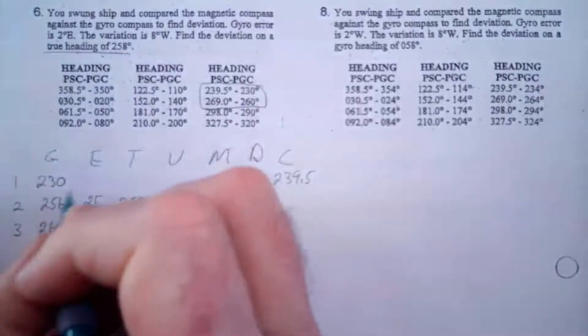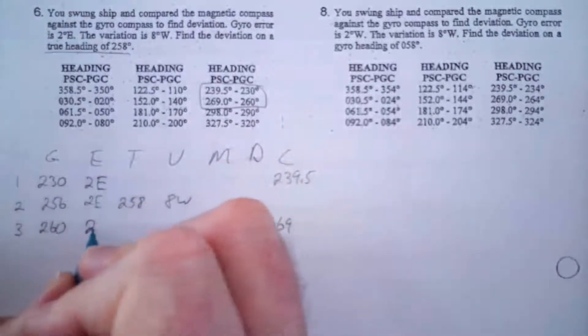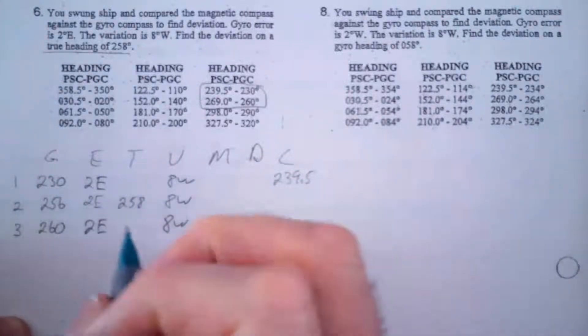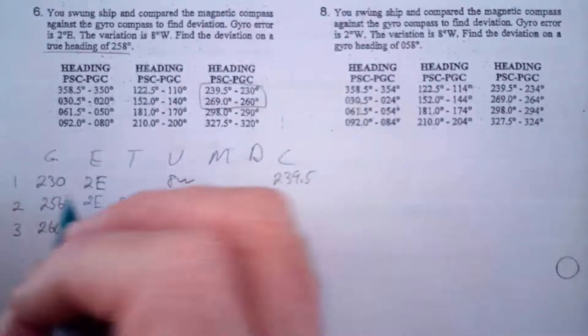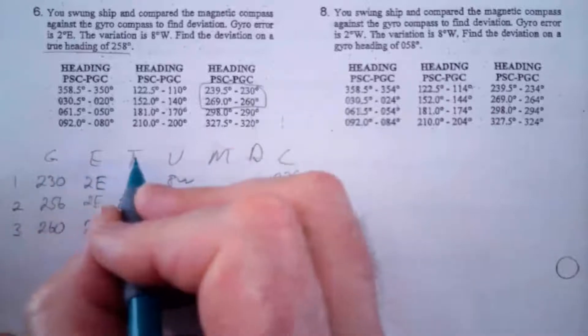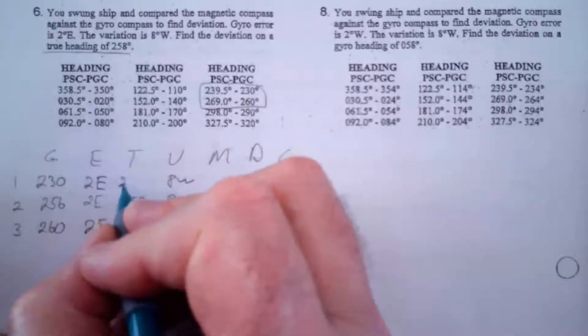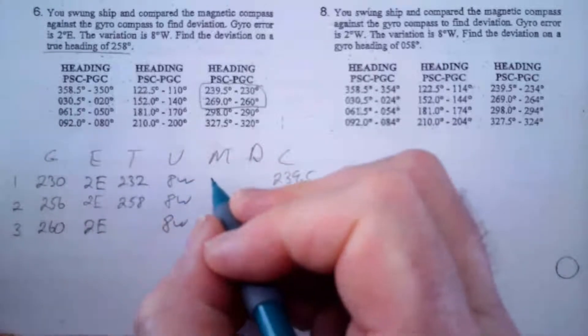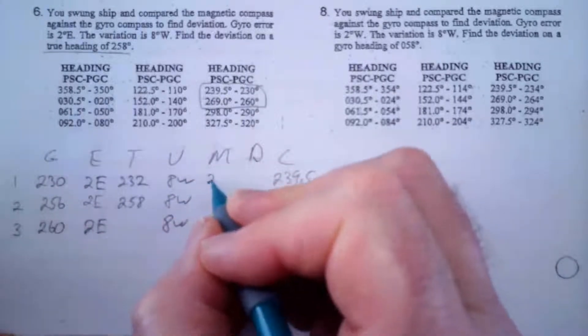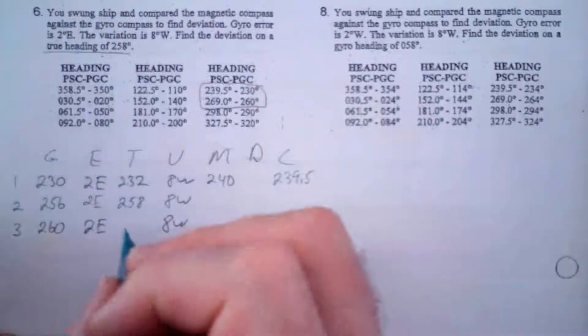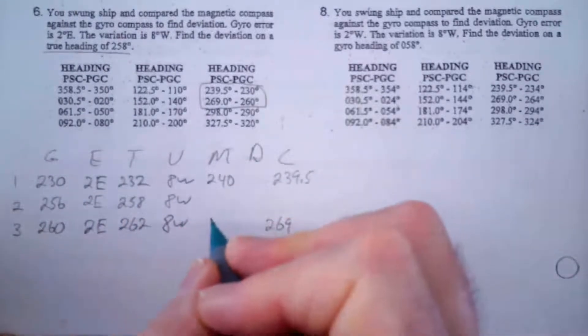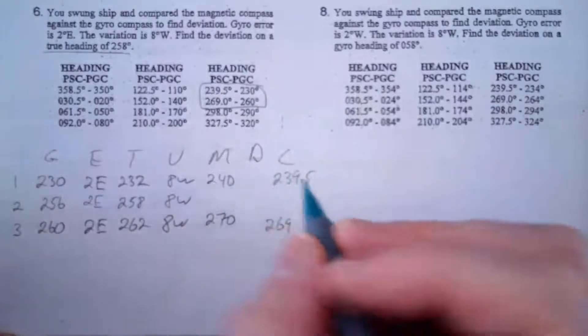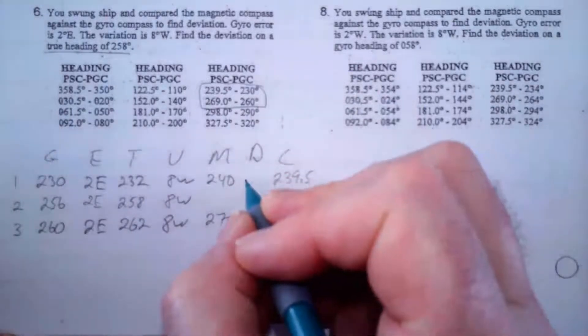So that's 2 east, that's 8 west. Now I'm going to run this. So that's adding, going towards true from compass I'm going to add east so that's 232, and 8 west going towards compass I'm going to add that so that is 240. This becomes 262 and that becomes 270.